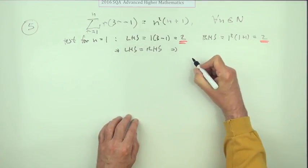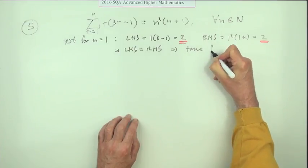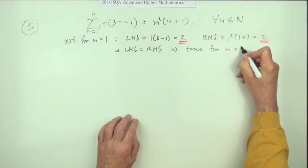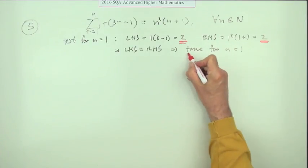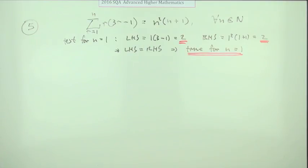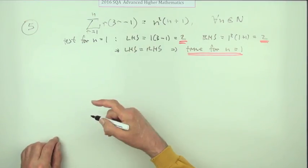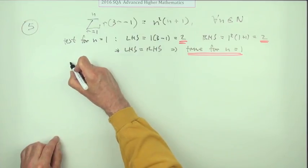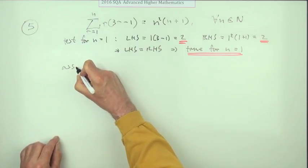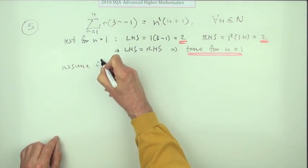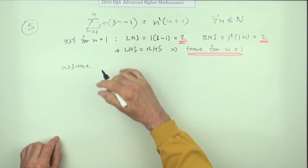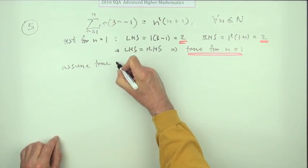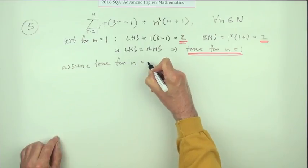So that means the important bit: it's true for n equals 1. Now you introduce the inductive hypothesis. Assume true for n equals k, some number k.